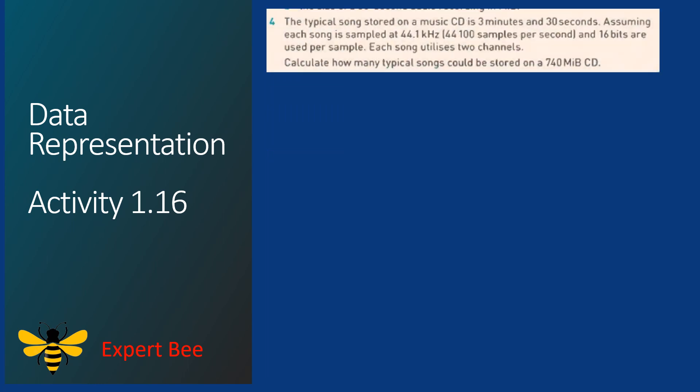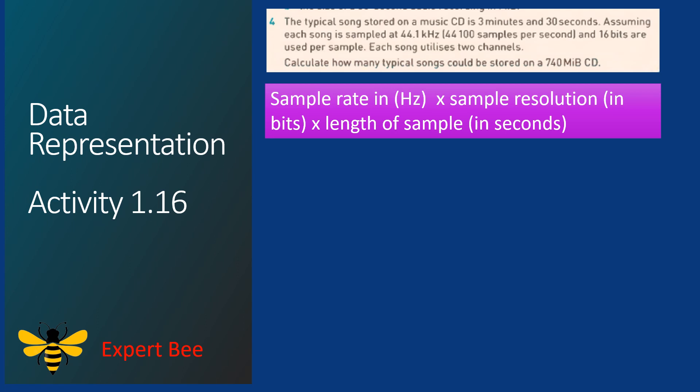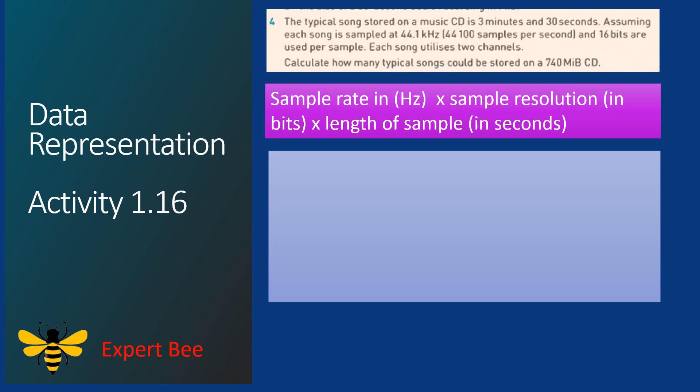Now we will solve Question 4. A typical song stored on a music CD is 3 minutes and 30 seconds. Assuming each song is sampled at 44.1 kilohertz (44,100 samples per second), 16 bits are used for samples, and each song utilizes two channels — calculate how many typical songs could be stored on a 740 MB CD. We will use the formula: sample rate × sample resolution × length of sample.